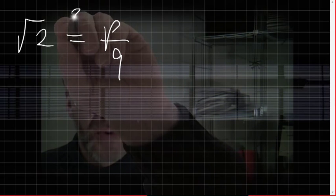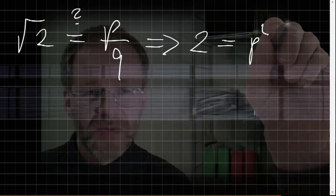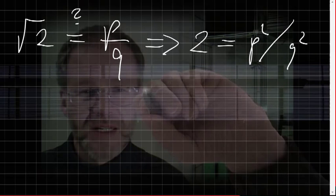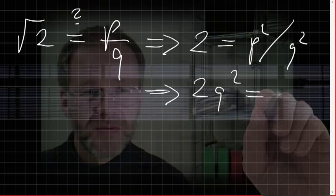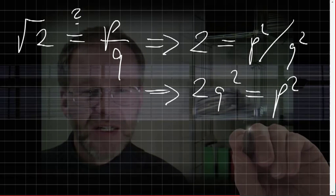Can the square root of 2 be written as the ratio of two integer numbers p and q? If so, we could square both sides and get 2 equals p squared divided by q squared, and hence 2q squared equals p squared.